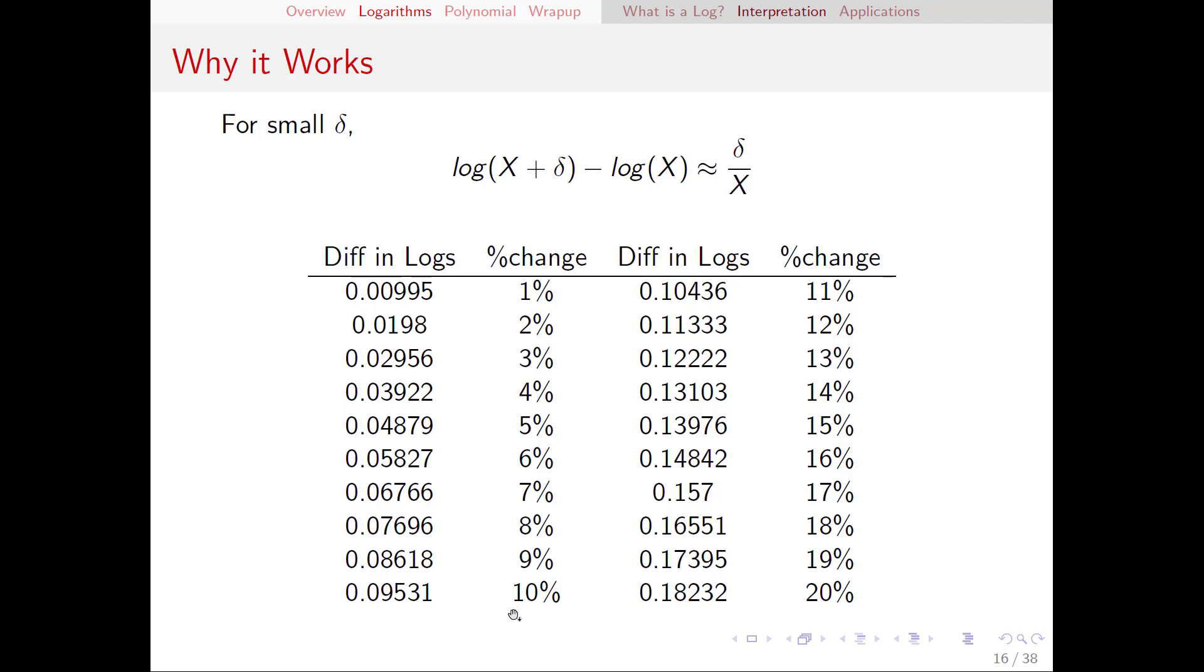By the time we get down to 10 percent you can see we're about half a percentage point off and by the time we get to 20 percent we are nearly two percentage points off. Keep in mind that this approximation is very good for small deltas but as the delta gets bigger then the approximation is going to be a little bit less reliable.